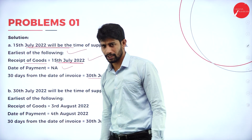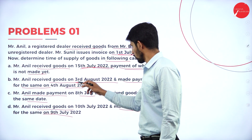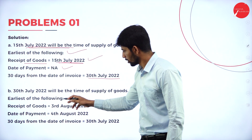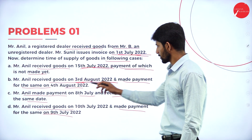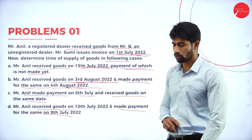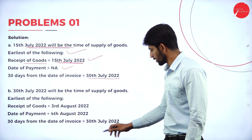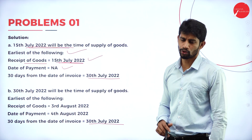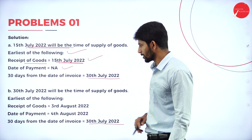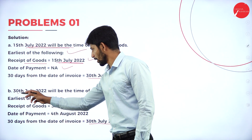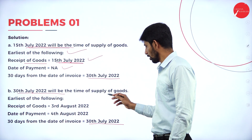Case B: Date of receipt of goods is 3rd August 2022. Date of payment is 4th August 2022. 30 days from the date of invoice is 30th July 2022. In these three dates, which is the earliest date? Obviously 30th July 2022 is the earliest date. So 30th July 2022 will be the time of supply of goods.